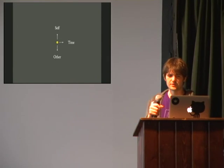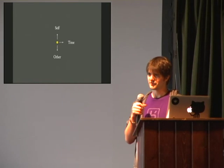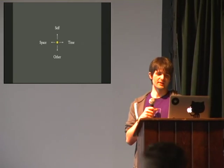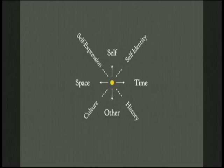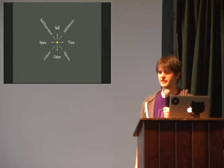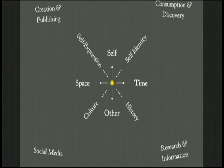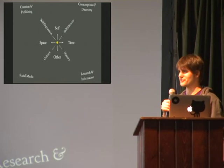Just like before, where we were learning how to persist things over time, now we can persist things over space — we can communicate with people all over the world instantly. When you have the Internet, you can navigate this entire sphere without anything stopping you from learning what you want — self-identity, self-expression, culture, history. There are all these different platforms: social media for culture, creation and publishing tools for self-expression, consumption and discovery tools for self-identity, and research and information tools for history.